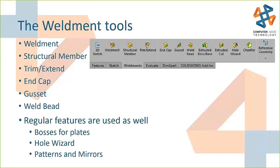The weldment tools are a dedicated set of commands to help you build this type of model. Starting with the weldment feature, that's what keeps track of the cut list and keeps the merge body option off. Then the dedicated tools: structural members to create tubular or steel cross-sectional shapes — maybe aluminum, maybe lumber — anything with a constant cross-section. Automated ways to trim or extend with a lot of flexibility, cap ends with end caps, add plate gussets, and represent welding conditions with weld beads.